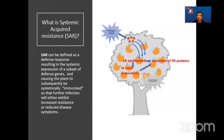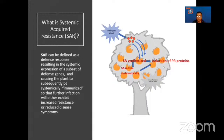So what is systemic acquired resistance? Systemic acquired resistance, or SAR, can be defined as a defense response resulting in the systemic expression of a subset of defense genes, which causes the plant to be immunized so that further infection will either exhibit increased resistance or reduced disease symptoms. In short, if the plant is infected in one part, that signal will be transmitted throughout the tree, and it is expected that the tree will be immunized from further infection against HLB. The process works by the synthesizing of salicylic acid, which results in the induction of PR proteins — key proteins responsible for resistance in the plant.